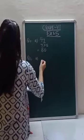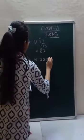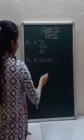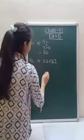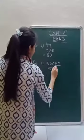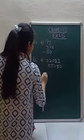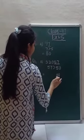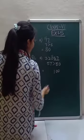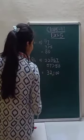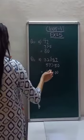Question number 2: estimate each of the following numbers to its nearest 100. We have to see the last two digits of the number — 57. Since 57 is greater than 50, we put zeros in the place of ones and tens and add 1 in the place of hundreds. The rest of the number remains the same, so 32,100 is the answer.